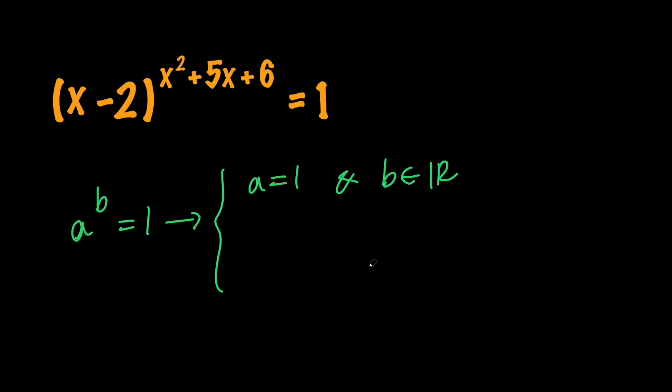The other case is that a equals negative 1 and b should be even because negative 1 to the power of something even gives us 1.